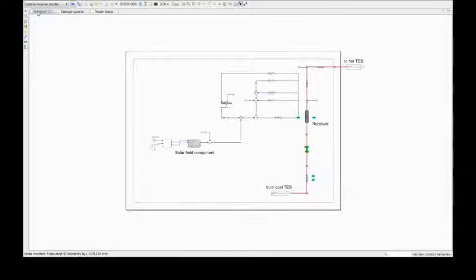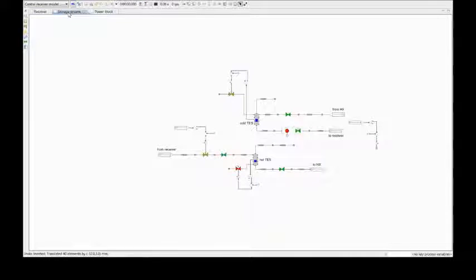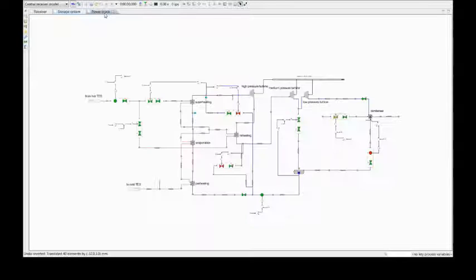The model is built up of three different diagrams. On the first one, we have irradiance generation, heliostat field and receiver. On the second one, we have two-tank storage system, and the third one has the steam generator and power block. All control loops are integrated into the model.